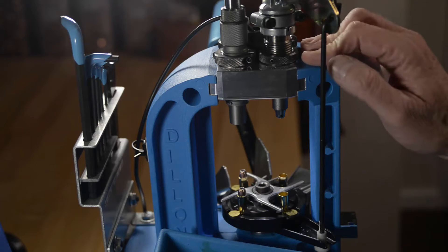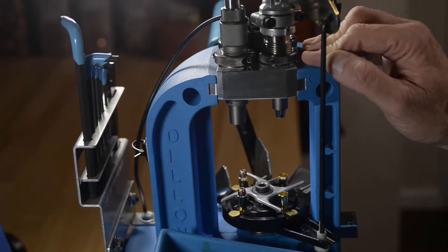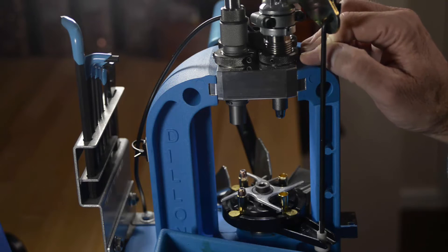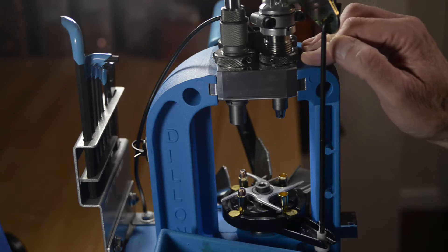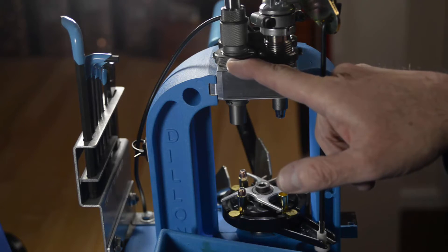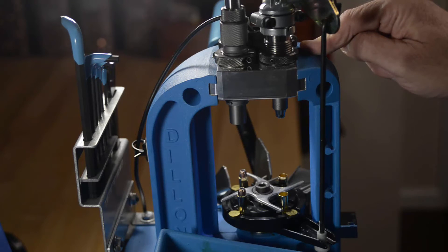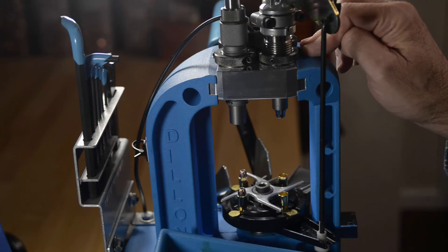I am sure you have heard many times that you want your reloading press and work bench as rigid as possible. This helps with making consistent ammunition. The same philosophy applies to the tool head. You want your dies firmly anchored to the tool head, and you want the tool head firmly anchored to the press. And I believe the threaded CNC machine tool head helps accomplish this.